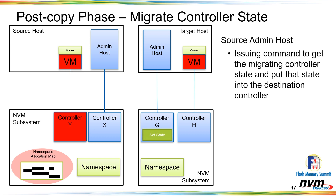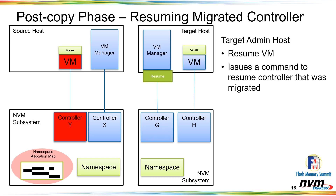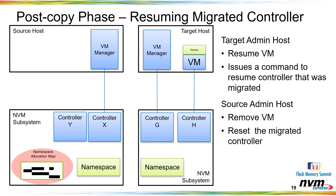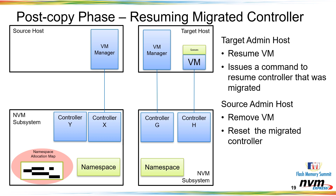Now everything is stable. We go get the controller state of controller Y — the queue pointers, heads, tails — and migrate that state over to the target host. The host does a 'set state' for controller Y on the target so it starts at exactly where it left off. Then the target host issues a resume command, controller Y comes up, and we've successfully migrated everything over. The source controller can be reset for additional work.